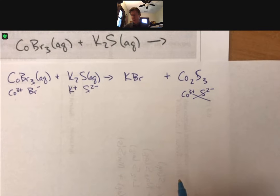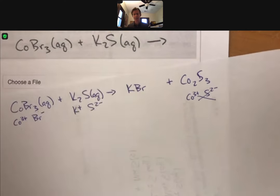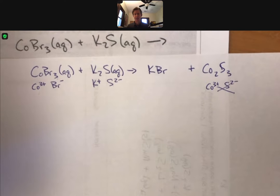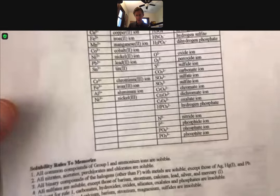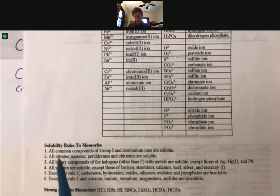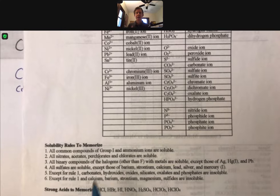Next step is to see, according to our solubility rules, what's soluble or insoluble. And to do that, I know that according to rule number one, all common compounds of group one are soluble. So AQ, aqueous for that.